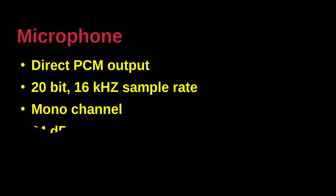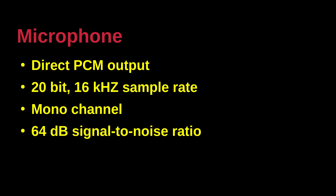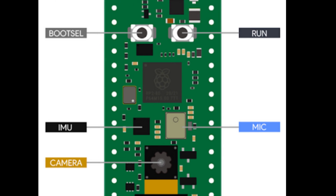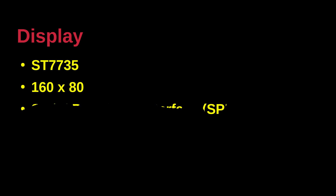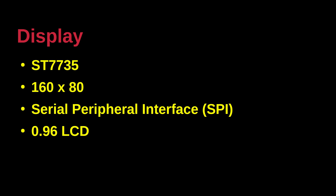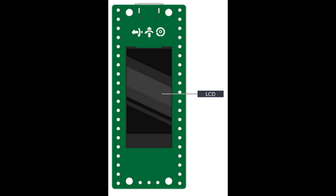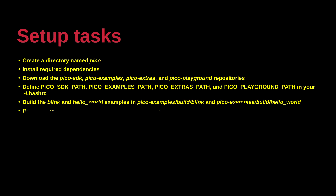The microphone uses pulse code modulation directly, has a 20-bit 16 kHz sample rate, mono channel, and 64 dB signal to noise ratio. The display uses the ST7735 chip, has a low 160 by 80 pixel resolution, relies on a serial peripheral interface, and the dimension is 0.96 inches liquid crystal display.